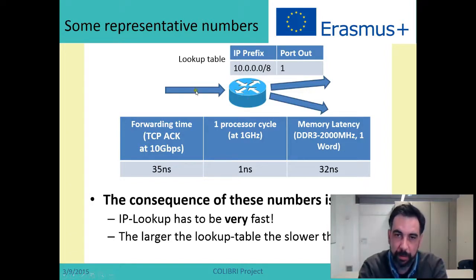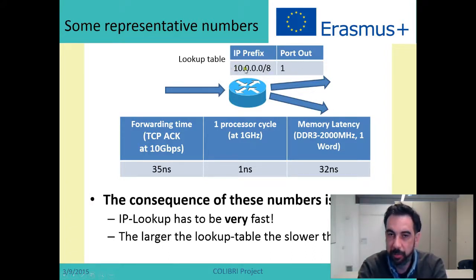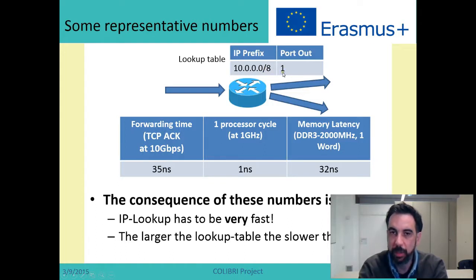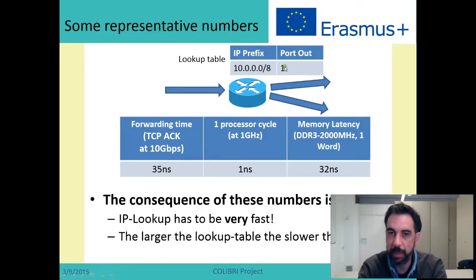How does a router work? It receives an IP packet on one interface, it looks up on a table where it has information about how it has to forward this packet. For instance, if it receives a packet addressed towards 10.0.0.0/8, it should forward the packet through interface 1. Routers typically have many, many entries on that table. It receives the packet, checks the destination IP address against this table, and decides which is the output interface, then sends the packet through it.